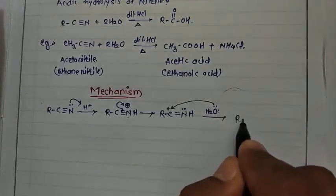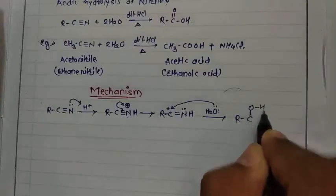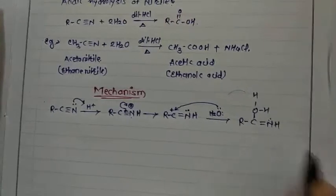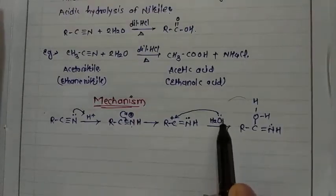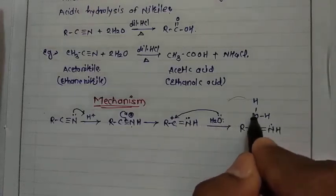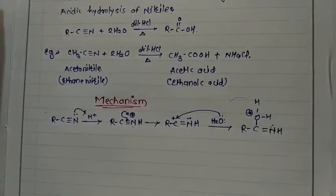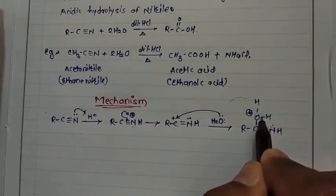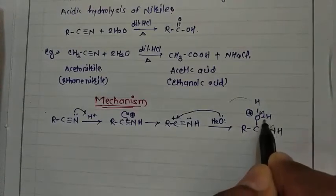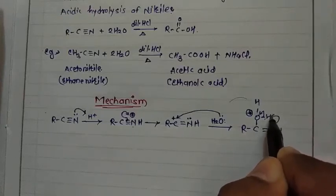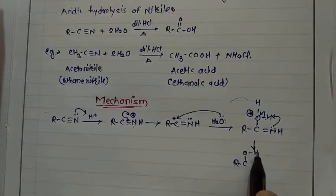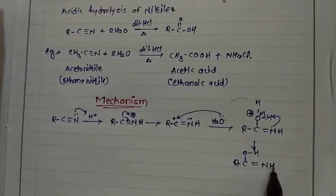The product of this water attack is R–C(–OH)(–H) with a double-bond N having a lone pair and –H. Oxygen forms a bond with carbon, so oxygen becomes positively charged. Since oxygen is electronegative, we adjust by moving the electron pair and releasing H⁺. The next intermediate is R–C(–OH) double-bond N–H₂, with nitrogen carrying a positive charge.